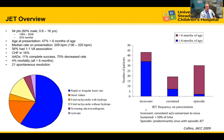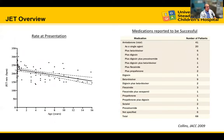Looking at the bar graphs, those with incessant JET — consistent rhythm without any conversion to sinus — were predominantly infants. Sustained JET means in JET more than half the time; episodic means it comes in and out with overall JET burden less than 50%. The vast majority that are incessant are under six months of age. As patients get older and JET becomes episodic, the infant population is much less common. Those diagnosed younger also had much higher rates, which decreases with age.